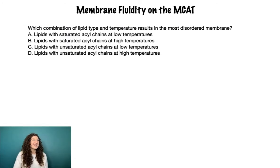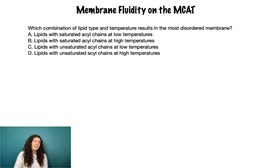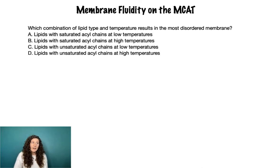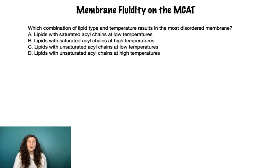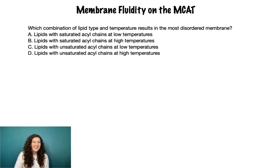Here is a typical question on membrane fluidity and structure that you could see on the MCAT: Which combination of lipid type and temperature results in the most disordered membrane? Lipids with saturated acyl chains at either low or high temperatures, or lipids with unsaturated acyl chains at either low or high temperatures. We're going to work through this piece by piece and talk through the content so you can answer any question like this on the MCAT.